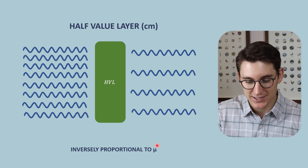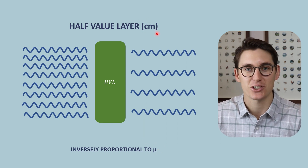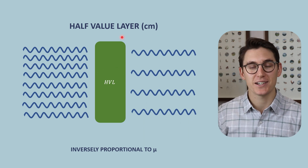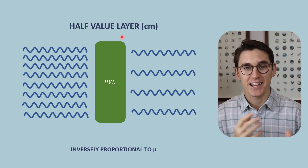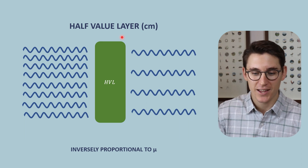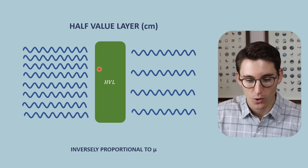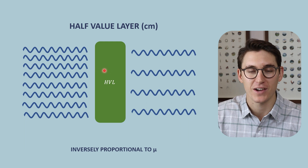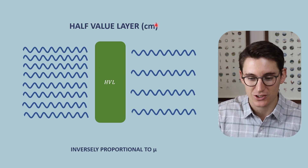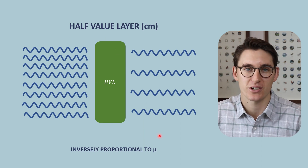As our linear attenuation coefficient increases, our half value layer decreases, and that makes sense. If our linear attenuation coefficient was high — if it took a large proportion of x-rays out of the beam quickly — then the distance required to remove half of those x-rays would be smaller. Our half value layer would be smaller. The half value layer is measured in units of distance: the distance required to remove half of those x-ray photons.